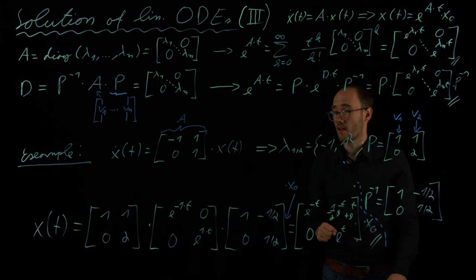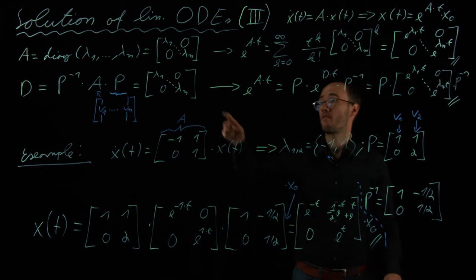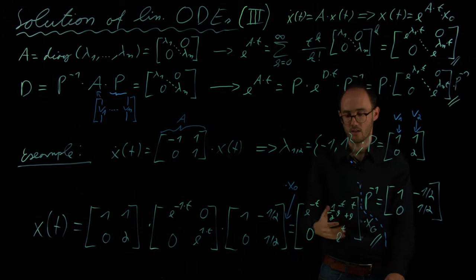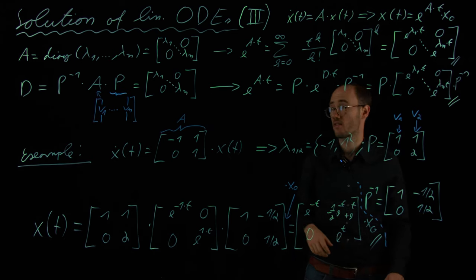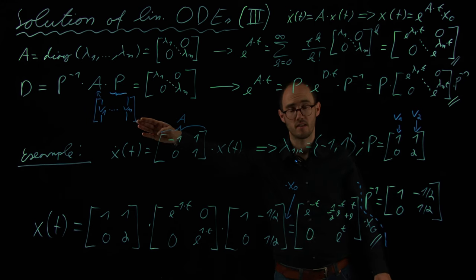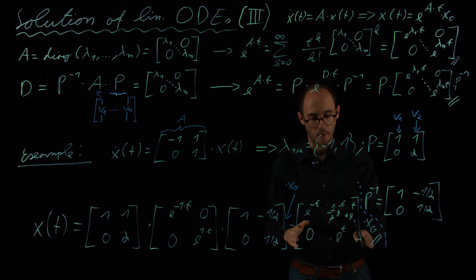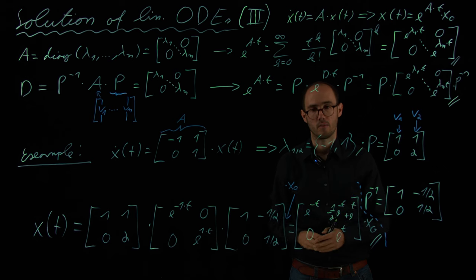Here we have limited ourselves to the simplified case where A is either diagonal or diagonalizable. However, one can also find similar techniques — for example, using Jordan matrices for matrices which are not diagonalizable — but we will not go into those details here. The main takeaway is that if you have a linear autonomous ODE, you are able to solve it analytically. Thank you.